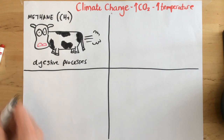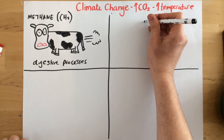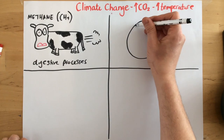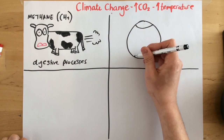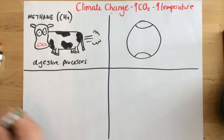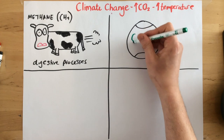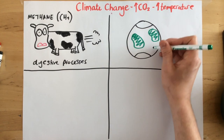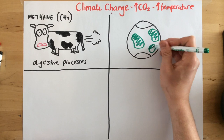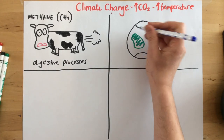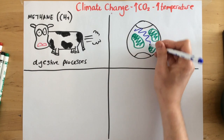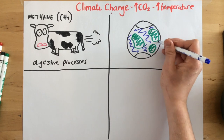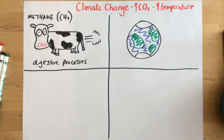Global warming is an example of climate change. But why is it bad that the world's getting a bit hotter? Surely in the UK that would be a really nice thing if it was a little bit hotter. So I'm going to show you the example here of why it's really bad news that the world's getting hotter.